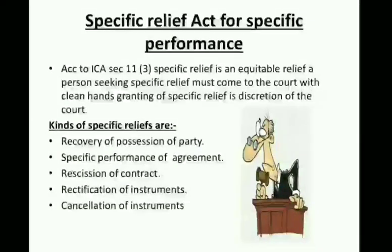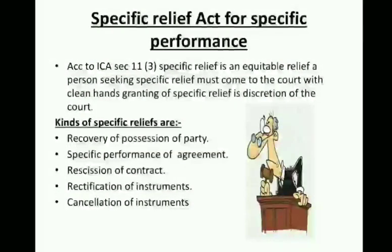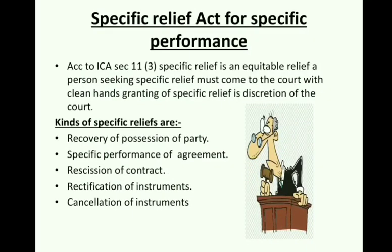Recovery of possession of property: the loss caused by the breach of contract will be remedied by possession of property of the defendant. Specific performance of agreement: the court will issue orders of specific performance to the defendant. Recession of contract: recession is the unwinding of a transaction, done to bring the parties as far as possible back to the position in which they were before entering into the contract. This is like an undoing of the agreement.